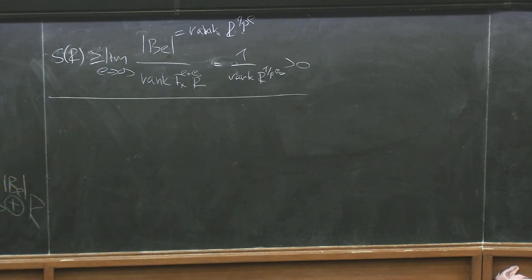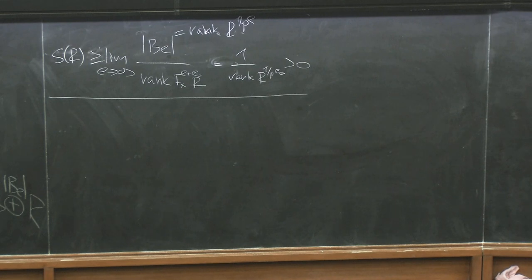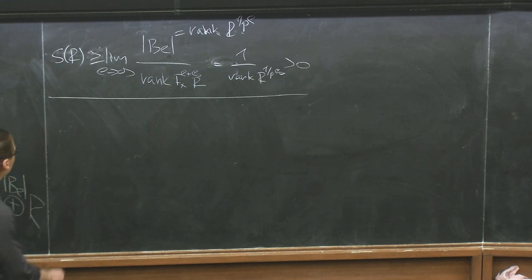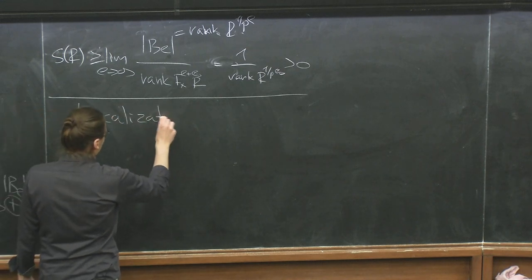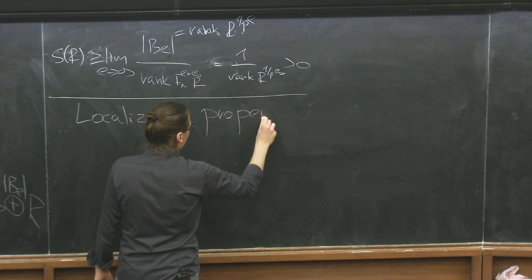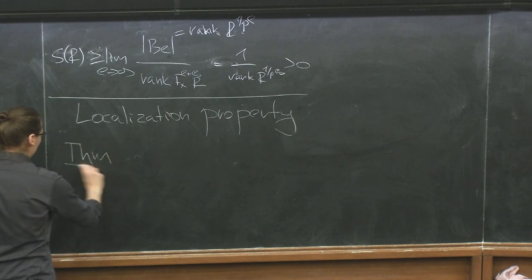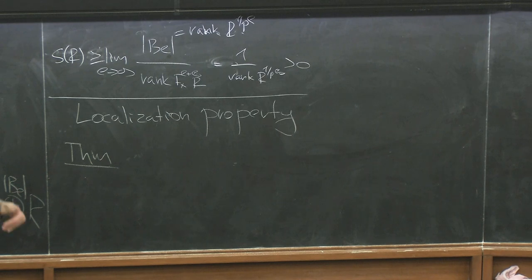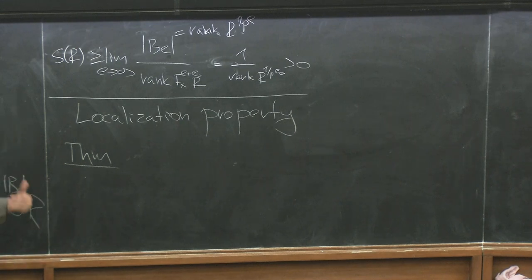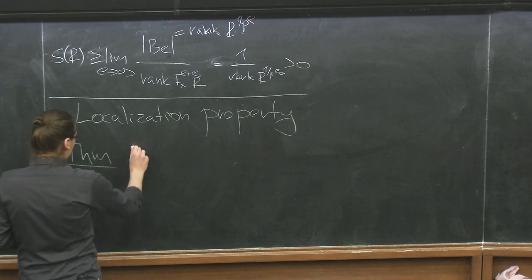Now we close this chapter and start a new one. We are going to work toward proving the theorem that both F-signature and Hilbert-Kunz multiplicity at the value 1 detect whether the ring is regular or singular. As a starting point, I want to prove that they satisfy a localization property — meaning that if I localize, my invariants behave in the appropriate way. We know localization of a regular ring is regular, so if an invariant detects singularity, it should behave correspondingly.